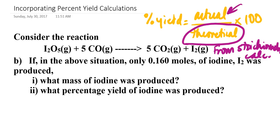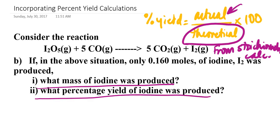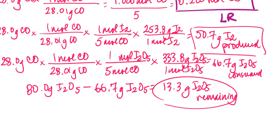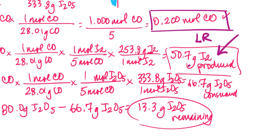For example: in the above situation — the same reaction from the previous slide — if only 0.16 moles of iodine was produced, then what mass of iodine was produced and what percentage yield of iodine was produced? Basically, they're telling you that this 0.16 moles is your actual yield. And if you recall, your theoretical yield of your iodine was expressed in grams.